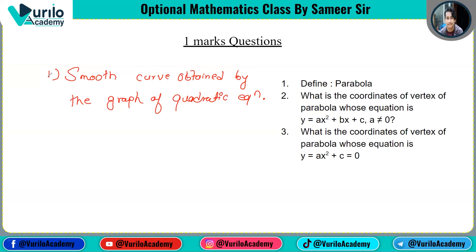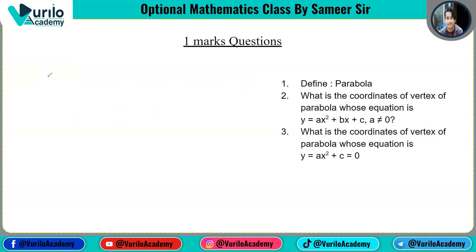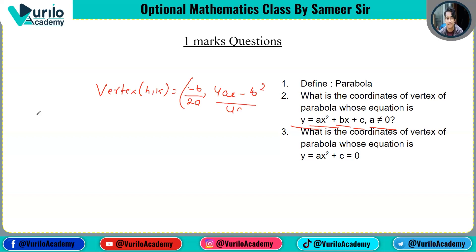What is the coordinate of the vertex of a parabola whose equation is y equals ax squared plus bx plus c, where b does not equal zero? The formula for the vertex is: x-coordinate equals minus b upon 2a, and y-coordinate equals 4ac minus b squared by 4a.